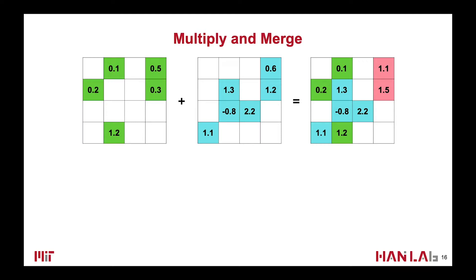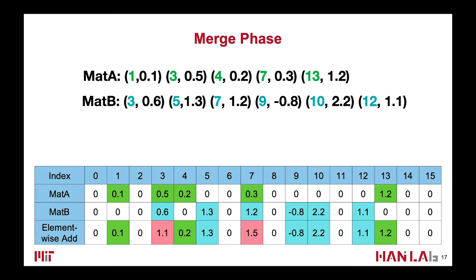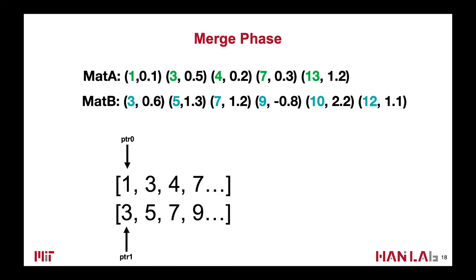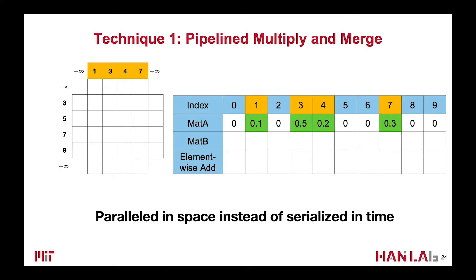Let us have a look at the multiply and merge phases. With the multiply array, we can get two partial matrices, and our goal is to merge them into one resulting matrix. We represent the partial matrix with the index and value format. The goal is to find the common indices of two matrices and add the corresponding values together, while keeping other values and indices unchanged. This is essentially a merge-sort process. In a CPU implementation, it uses two pointers on the two index vectors to compare them one by one, but this process is very slow because it is serialized in time.